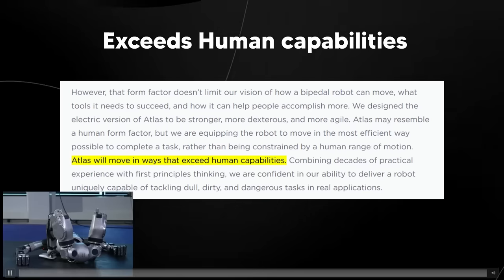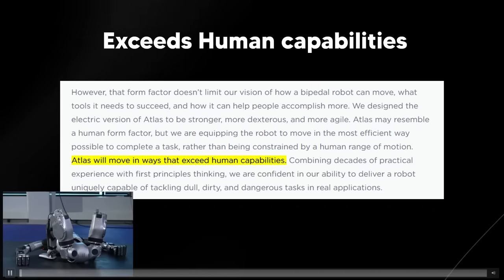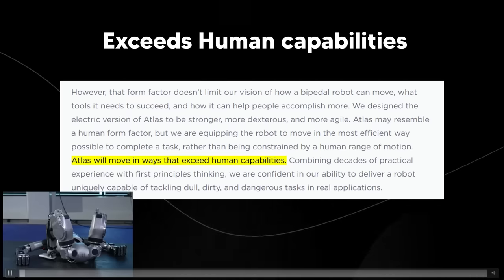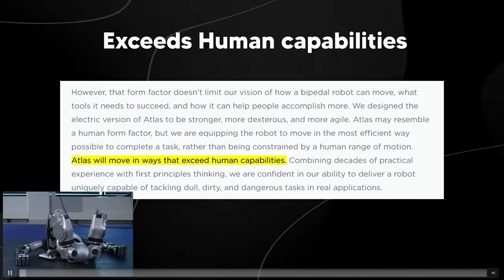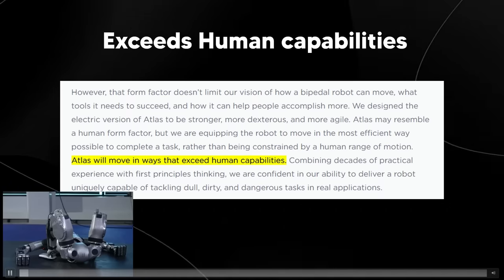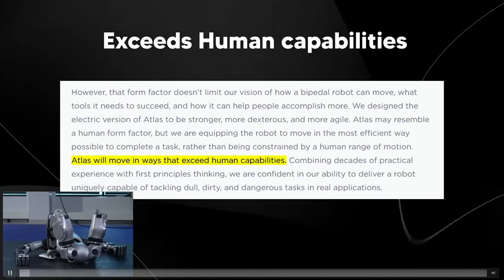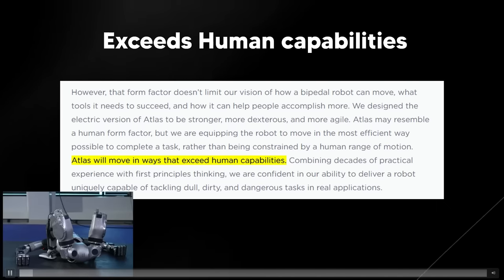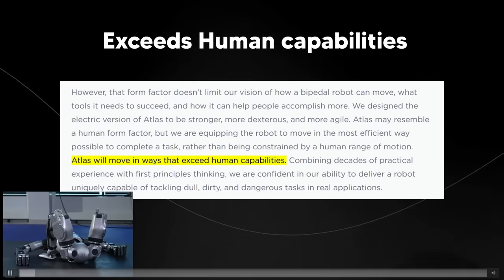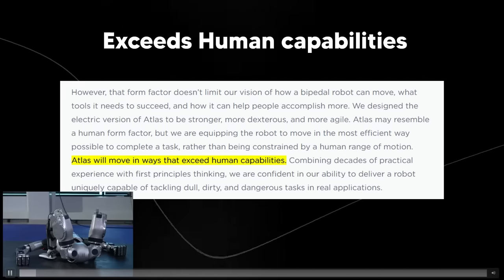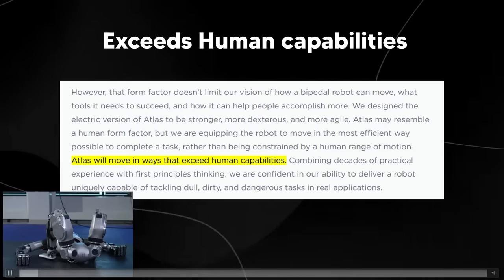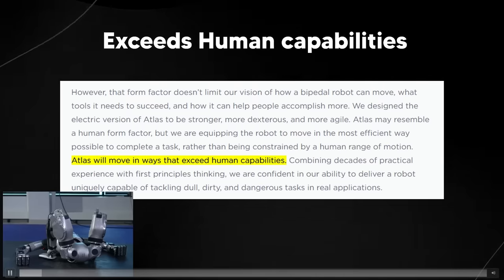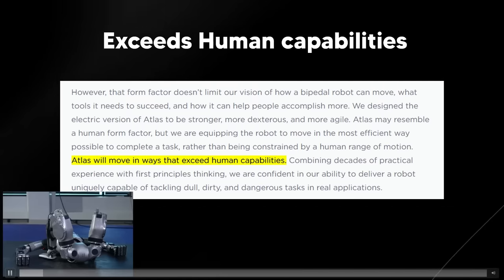In the blog posts, they state some more interesting things. They state that this is going to exceed human capabilities, which is a little unsettling for those of you who may have watched too many Terminator movies. However, that form factor doesn't limit our vision of how a bipedal robot can move, what tools it needs to succeed, and how it can help people accomplish more. We designed the electric version of Atlas to be stronger, more dexterous, and more agile. Atlas may resemble a human form factor, but we're equipping the robot to move in the most efficient way possible to complete a task rather than being constrained by a human range of motion.